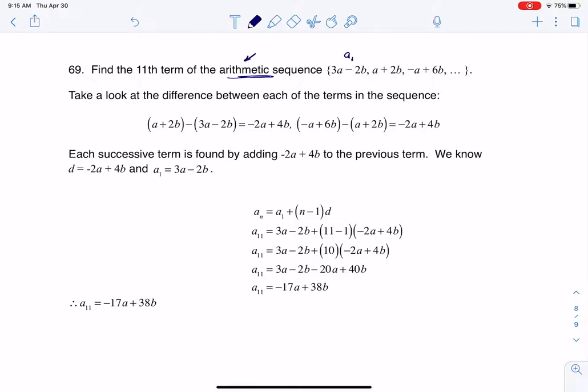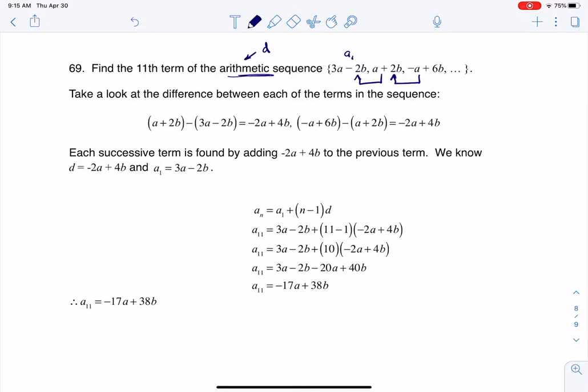But I would also, whenever I have an arithmetic sequence, like to know d, the common difference. Now I can get that by subtracting the first term from the second term or the second term from the third term. It doesn't matter, it should be constant, and that's what you see me doing here.